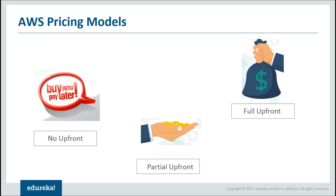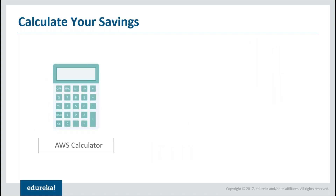So this is about different pricing models as far as AWS is concerned. Now, how does one calculate the savings? AWS has provided you with an AWS calculator. What this AWS calculator does is it lets you calculate your monthly expenses - the services which you've used and all those things. Hence you can keep track of all the money which you're supposed to invest. It also provides you with various templates which let you appraise your complete solution.